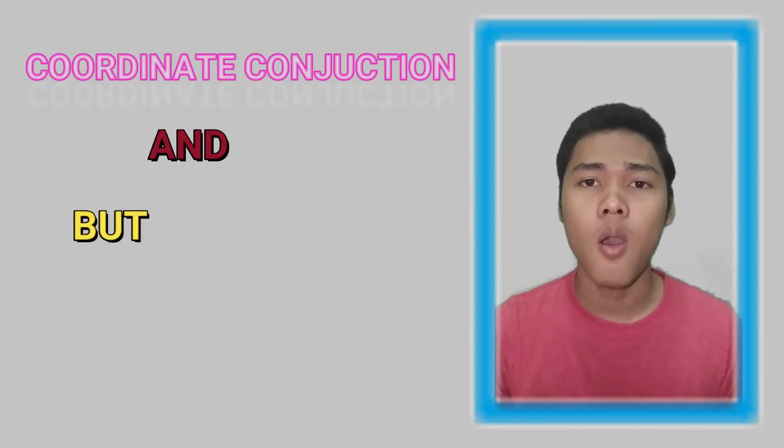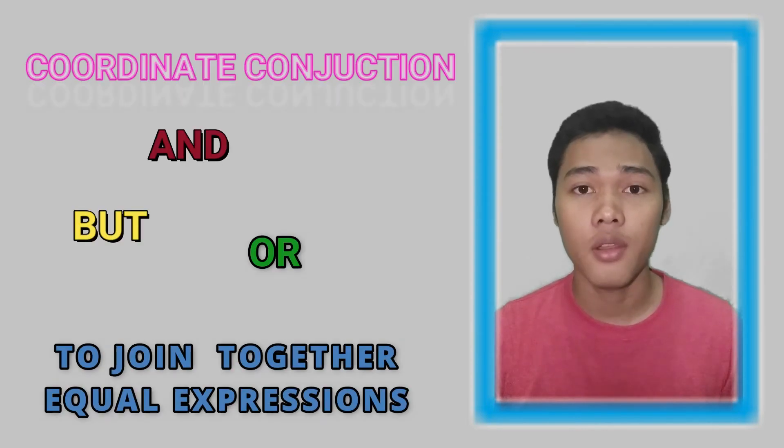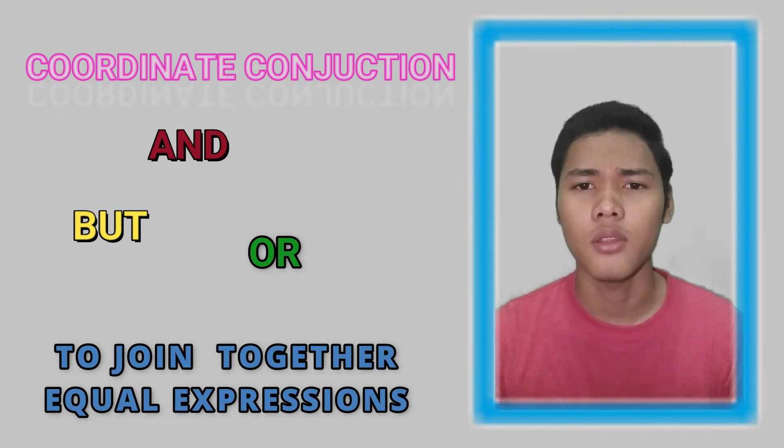So the job of the coordinate conjunctions like and, but, or is to join together equal expressions. In other words, what's on one side of these words must be parallel to what is on the other side.